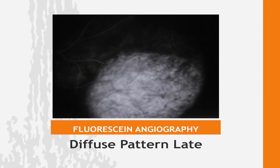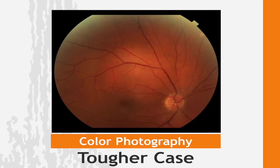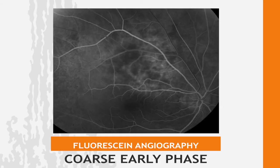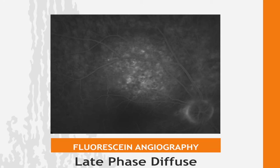This is the late pattern — this doesn't help anybody, it's just leaking. It's very hard to see the coarse vascular pattern if you wait until the late phases. Here's a tougher case — it is reddish but you don't really see any of the structures inside the lesion. We do the angiogram and see again the coarse vascular pattern, which is helping us make the diagnosis. In the later phase, you see a few scattered microaneurysms, but nothing like the melanoma or especially the metastatic tumor.